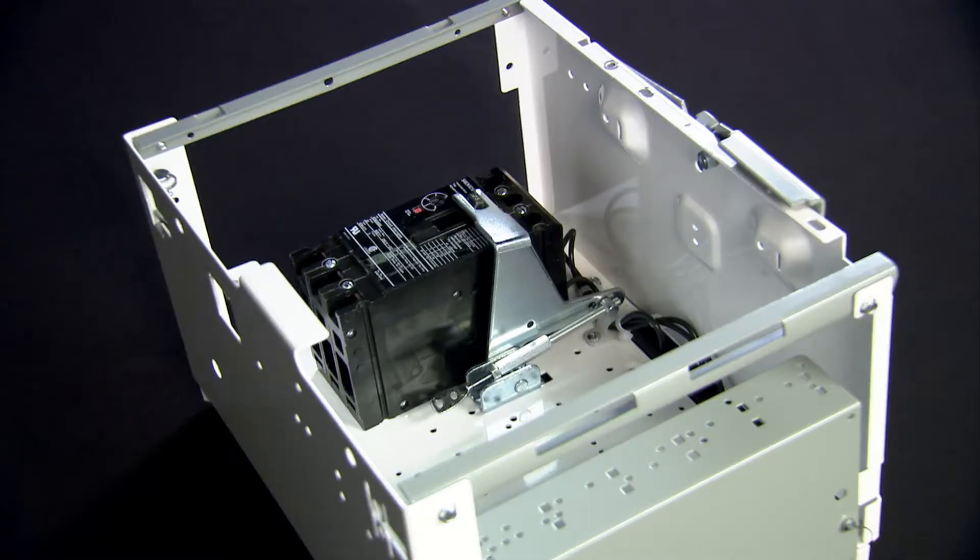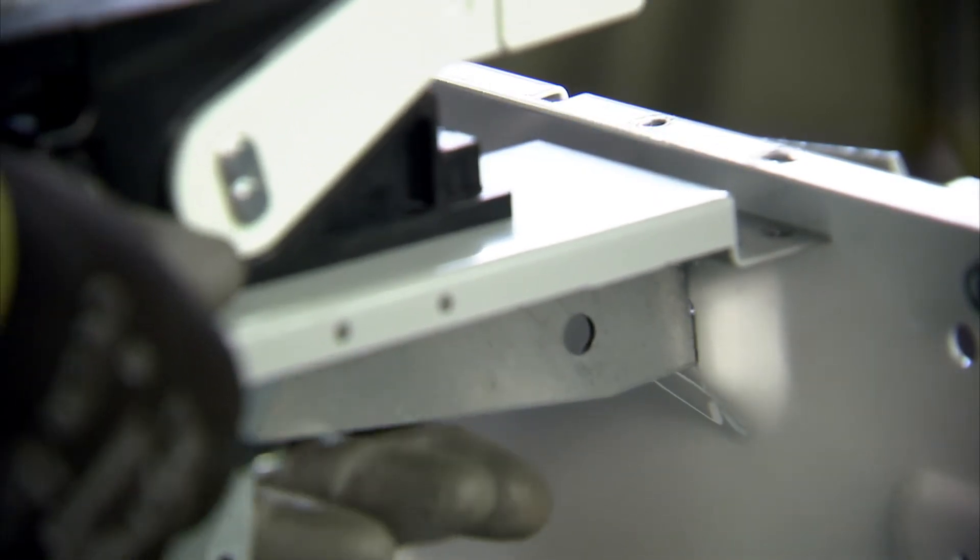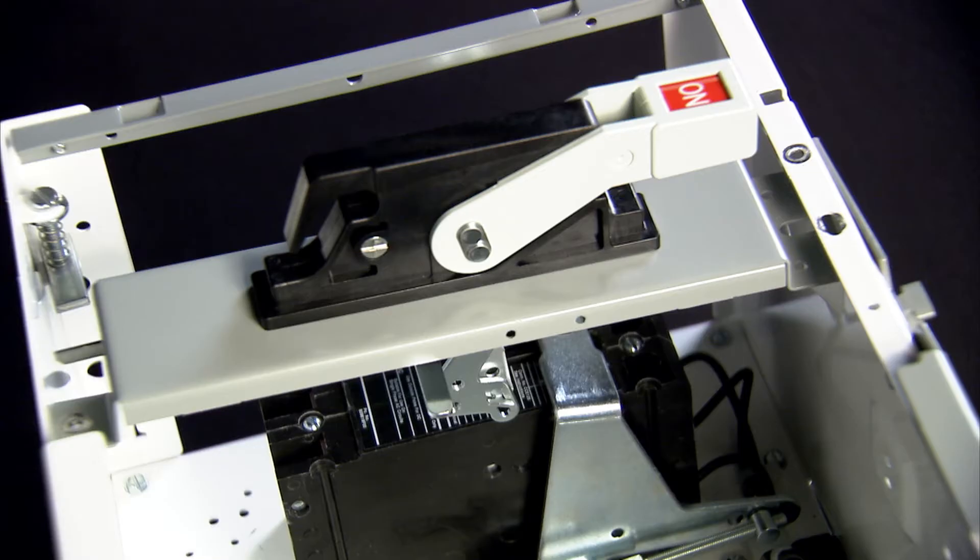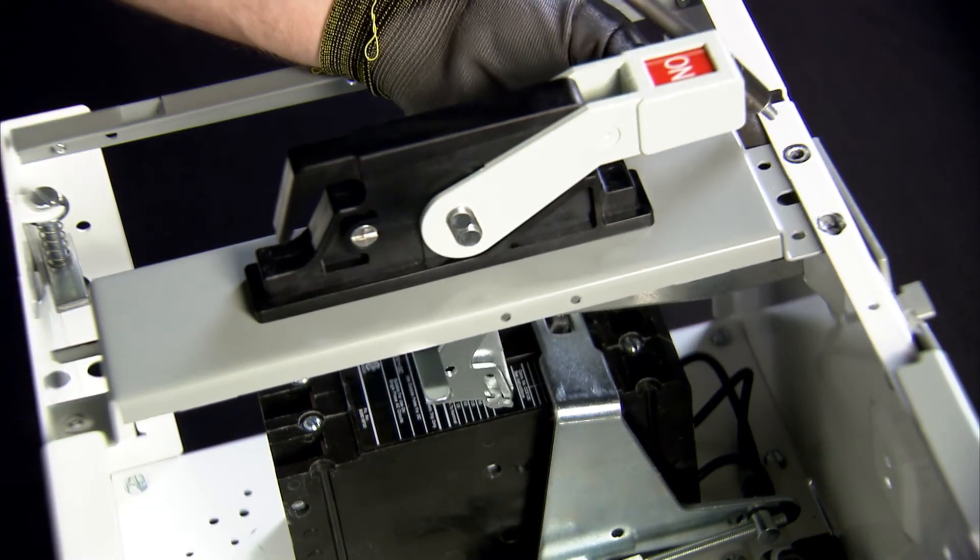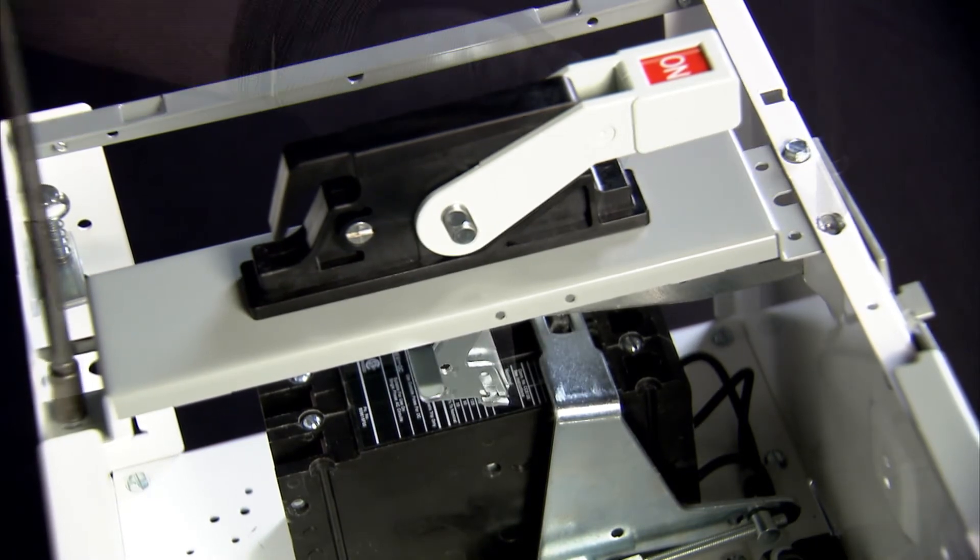When installing the handle assembly in the unit, make sure the top of the linkage arm is inserted into the slot in the top plate before the handle is screwed in place. Fasten the handle to the top plate and handle bracket using the three provided screws.